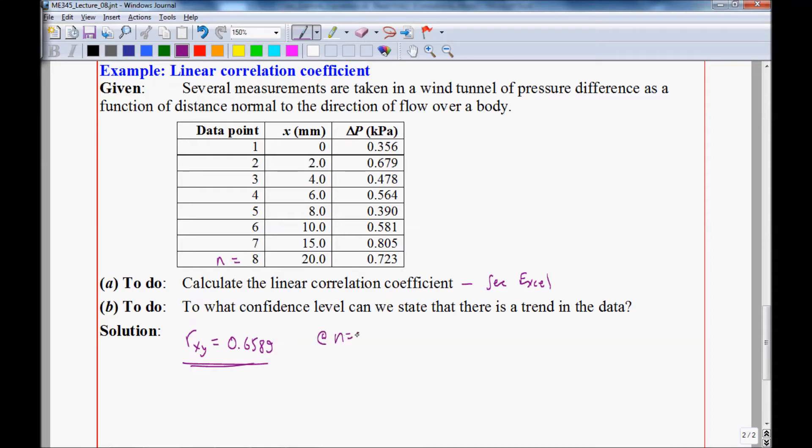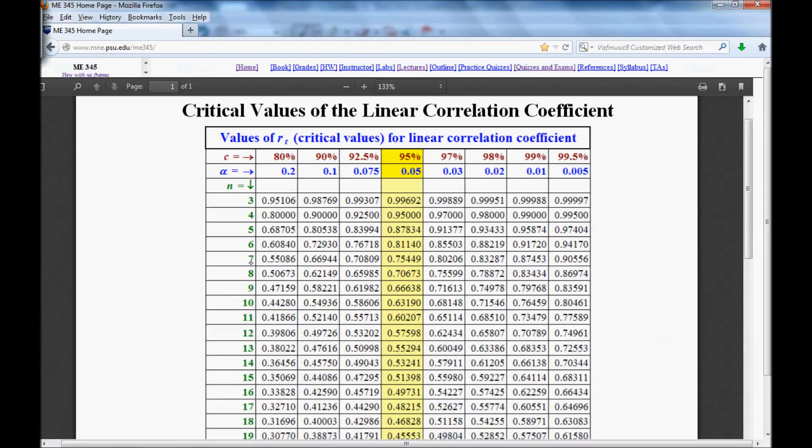At n equal 8, let's make a table of confidence level and the critical correlation coefficient. We get this from the table, which we have up here. So at n equal 8, we go across and find that at 90%, we get this value 0.62. And at 92.5, we get this value 0.65985. So our RT is somewhere in between these two.